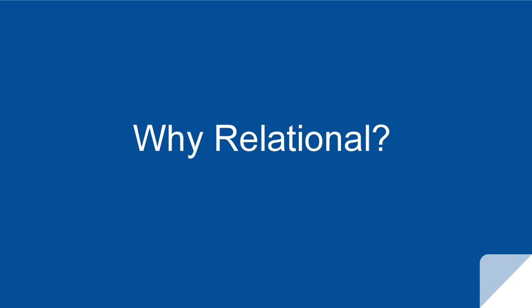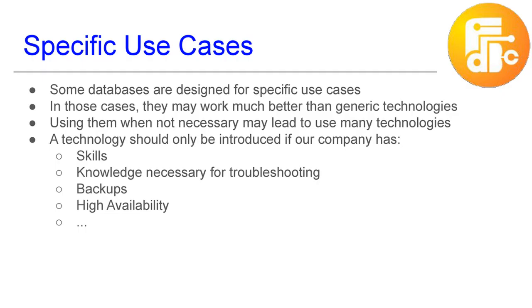It is fair to spend some words about why we are going to talk about relational databases, because there is a strong NoSQL movement — not as strong as it used to be some years ago, probably, but NoSQL databases still exist and they are good. Sometimes it is not obvious why you should use a relational database or a non-relational database. NoSQL databases are generally good for specific cases; they are designed to do something specific. For example, Memcached, which is very old and predates the NoSQL movement, is obviously designed to serve as a cache.